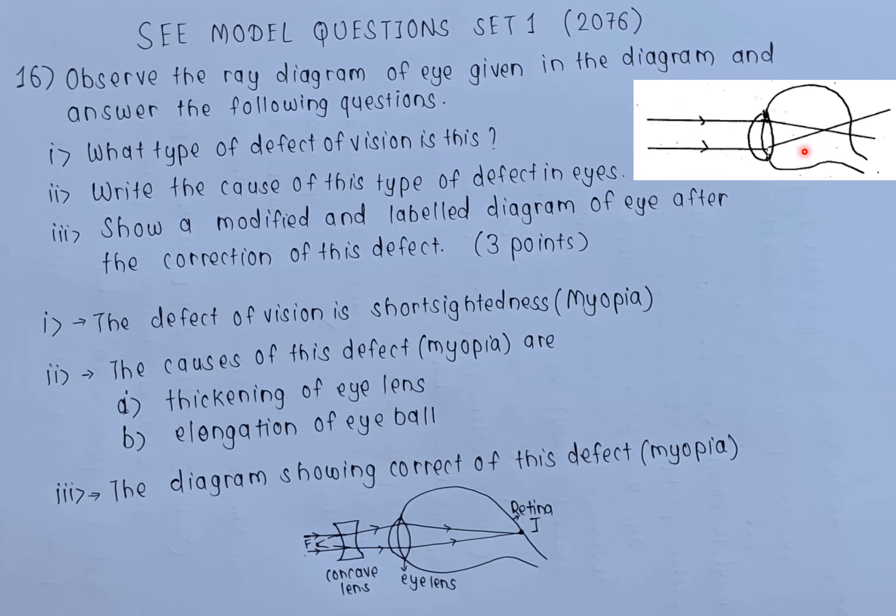The eye is unable to see an object at farther distance. Second question: what's the cause? The causes of this defect are thickening of the eye lens, when the ciliary muscle is unable to adjust the focal length of the lens properly, and elongation of the eyeball.